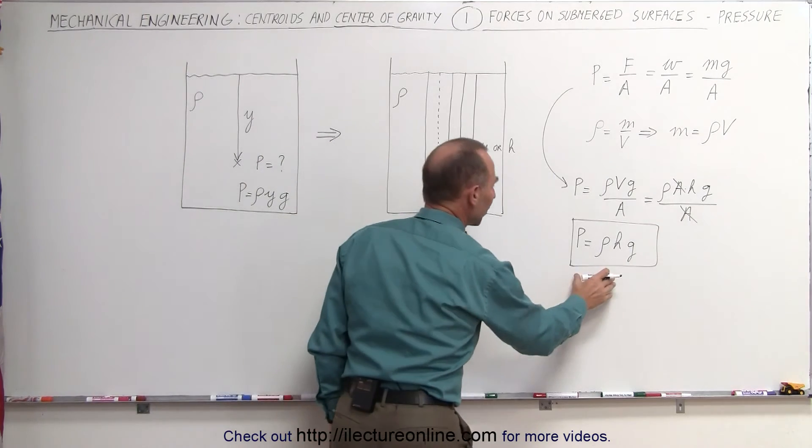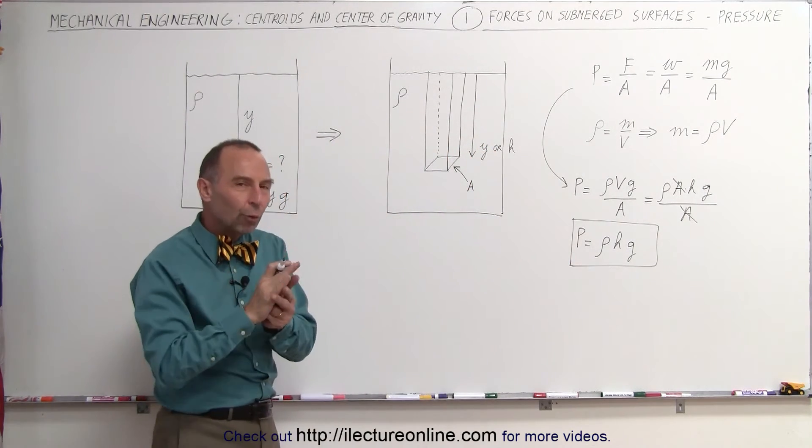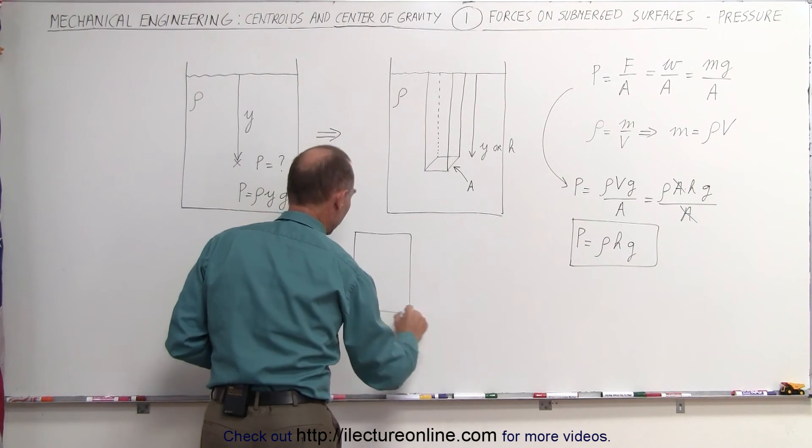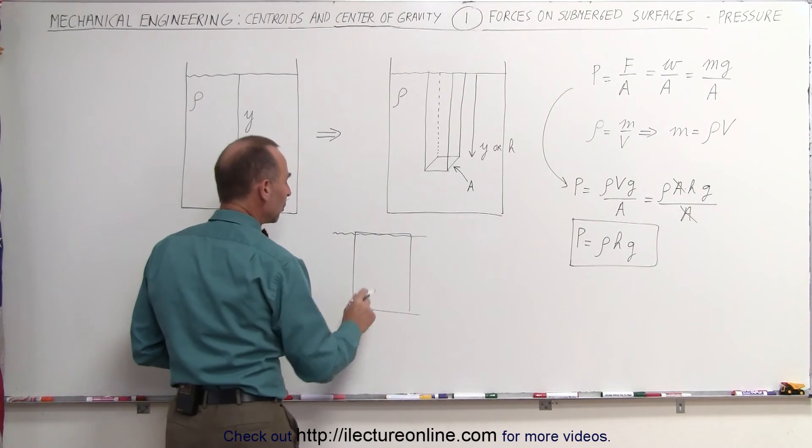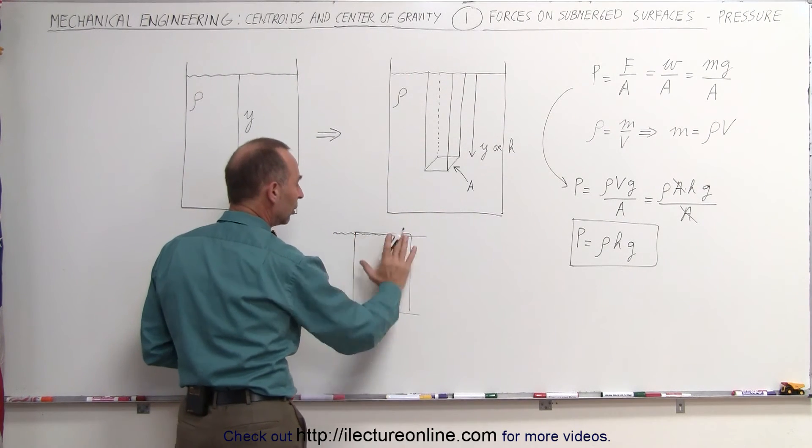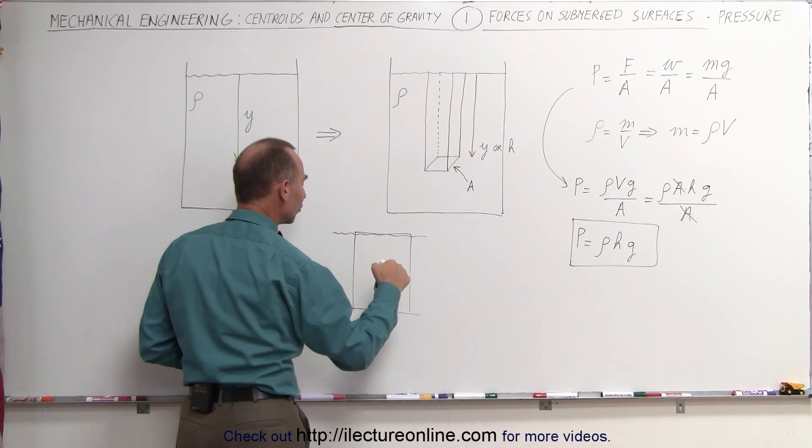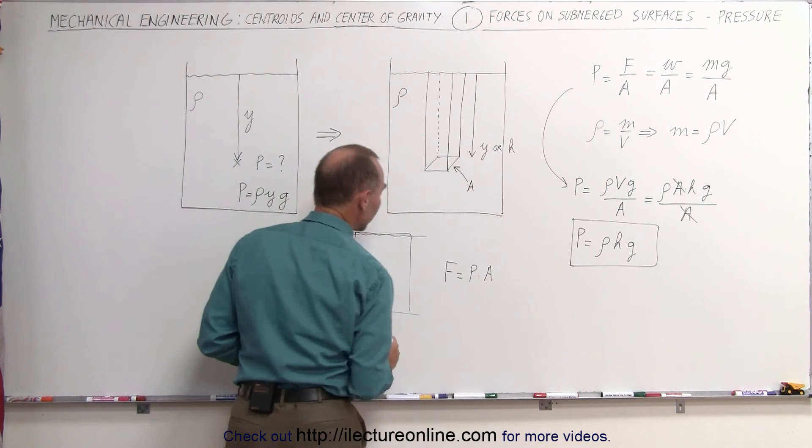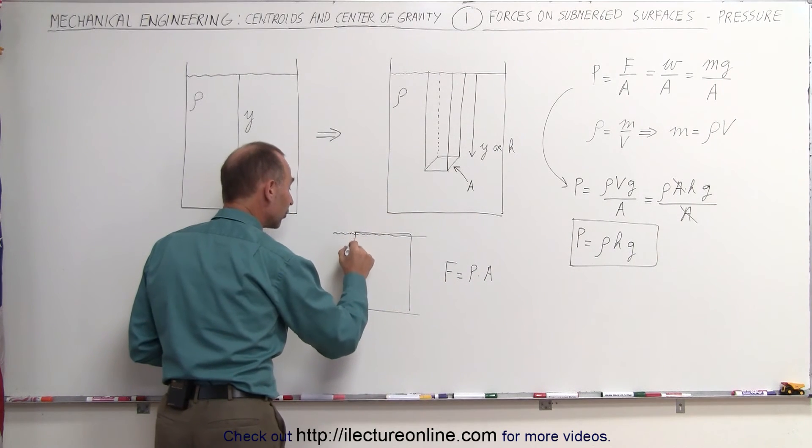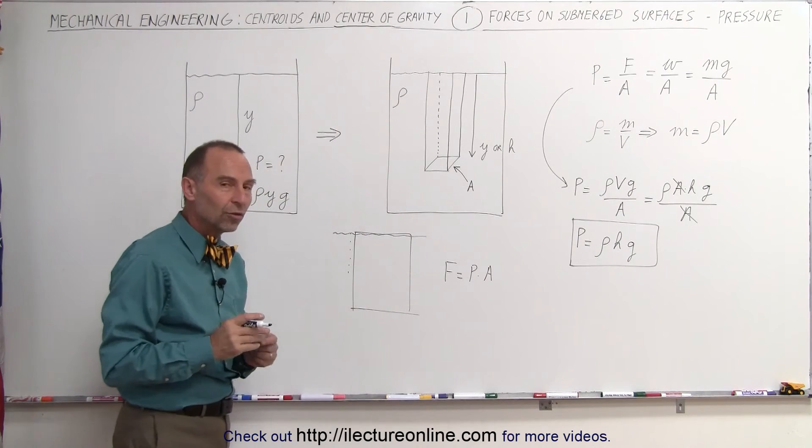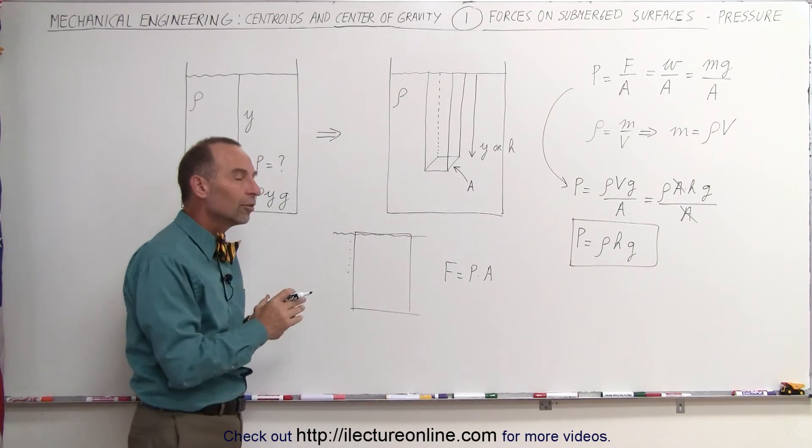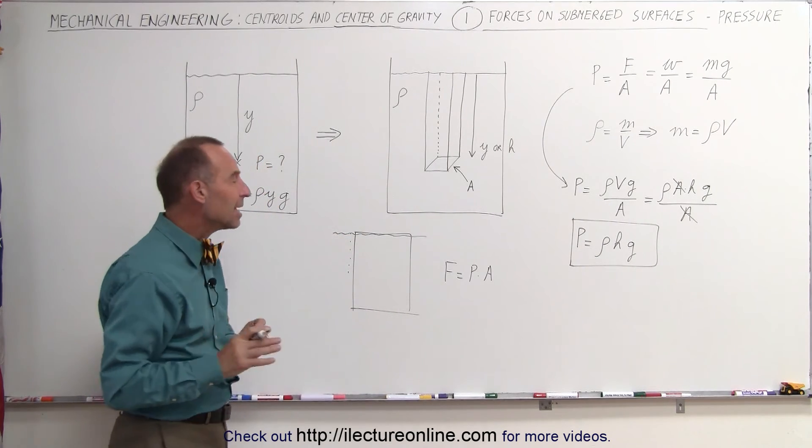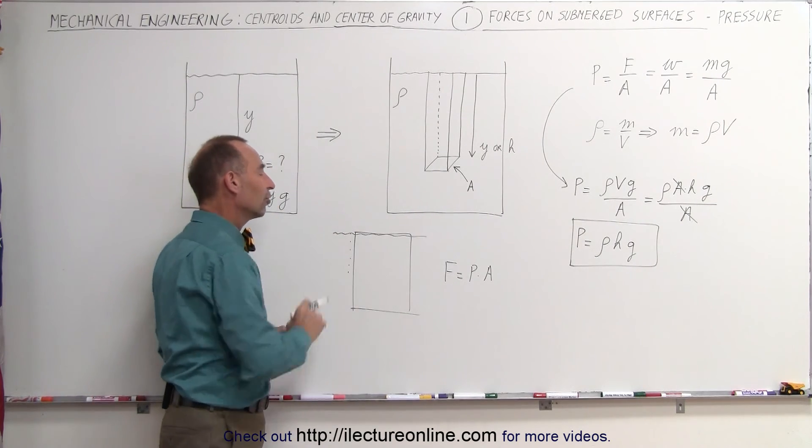Now that we know what the pressure is, we can now figure out what the force is on the submerged surface. Imagine a surface underneath the water. Let's say that the water line is right over here. We want to know the force on this wall. We know that it's due to the water pressure pushing against the wall. We know that the force is equal to the pressure times the area. The problem is that as you go further down into the fluid, the pressure increases. So it's not a constant pressure, it increases. So we need to figure out how to find the force by either integrating or coming up with some new techniques for finding the force on a submerged surface.